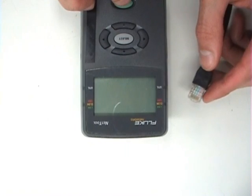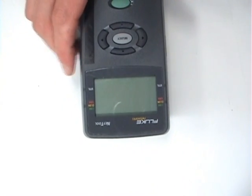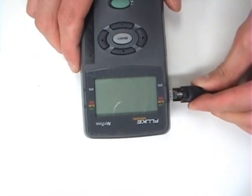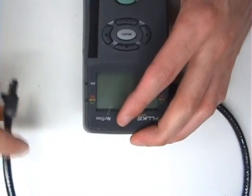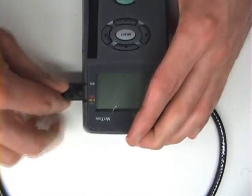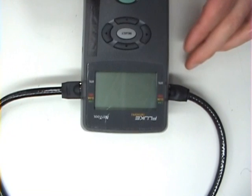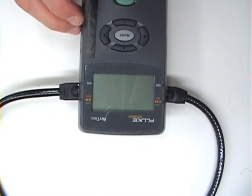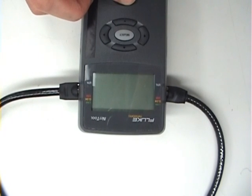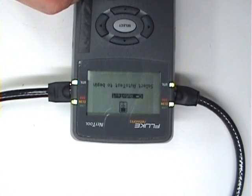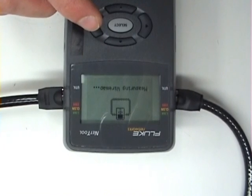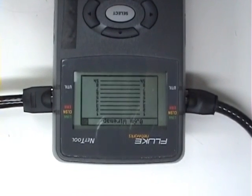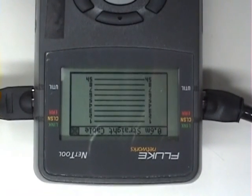And now it is time to test the cable using the Fluke net tool. And what we are hoping to see here is 9 connections for a straight through cable: 8 connections for our 4 pairs of wires, and 1 connection for the shield.